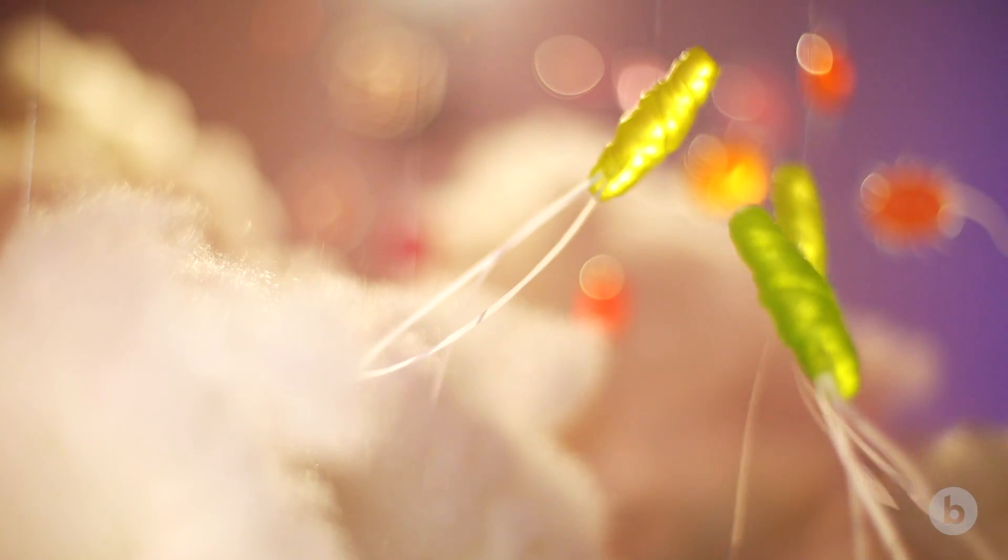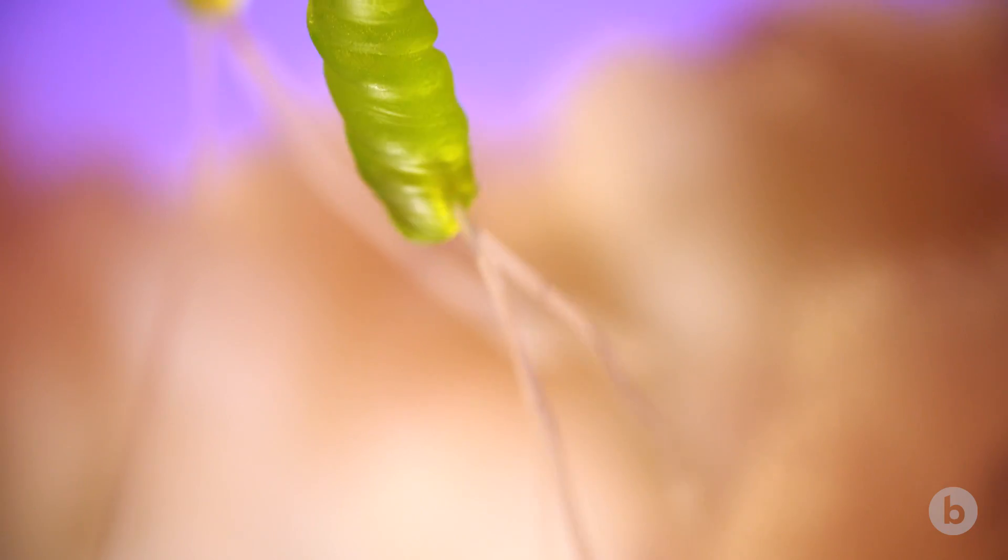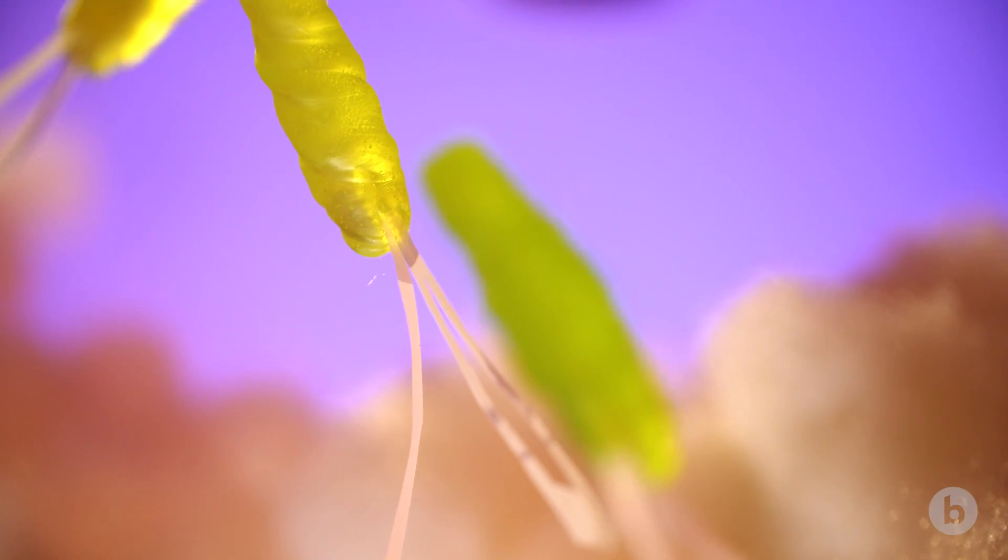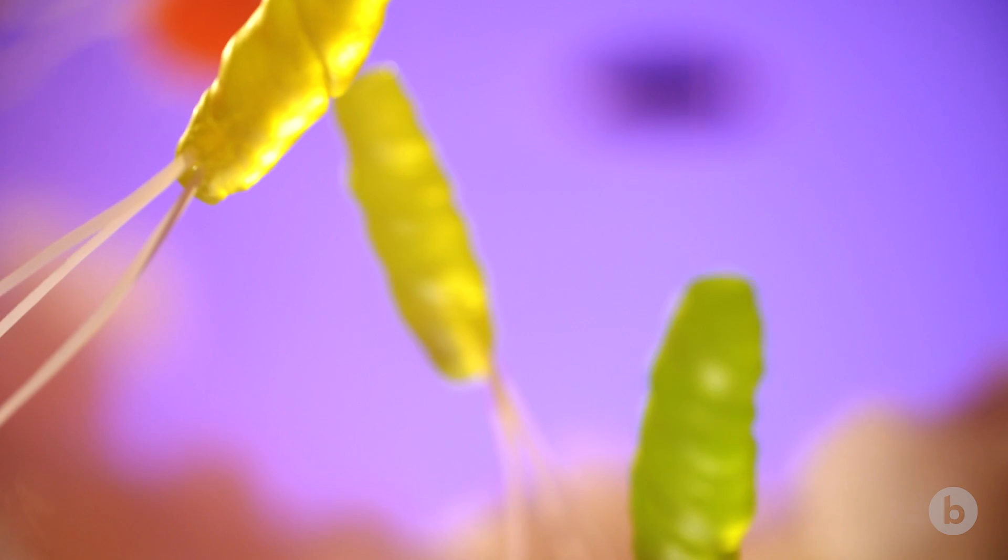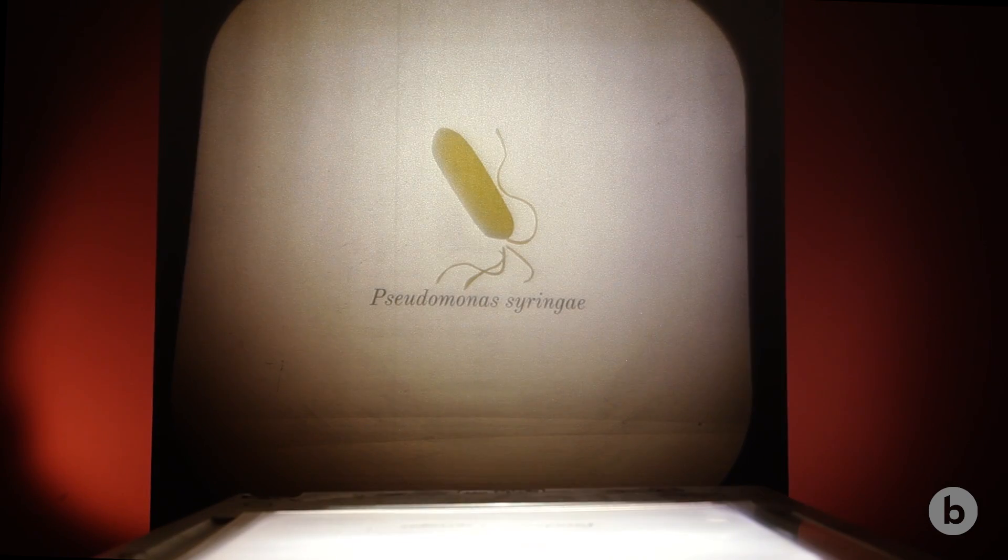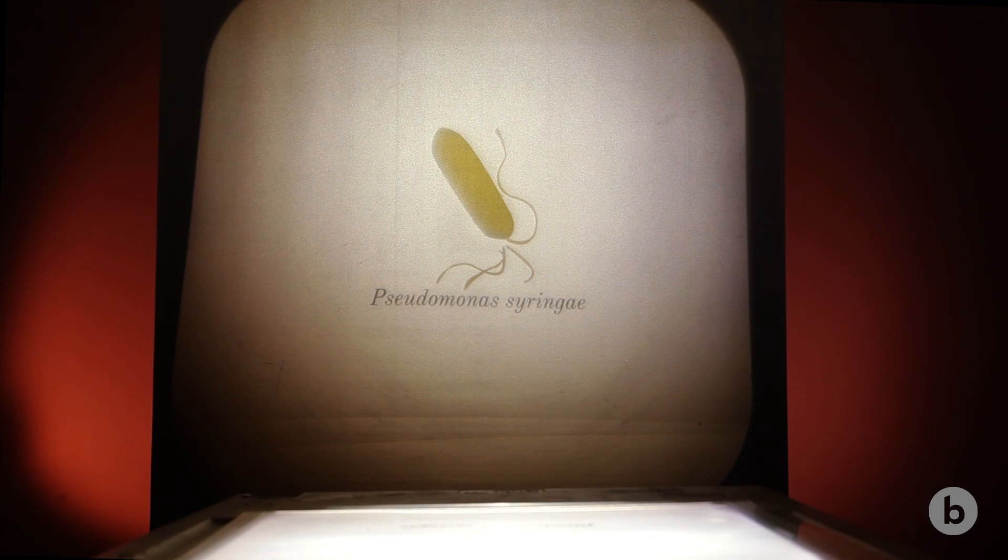This is a bacterium called Pseudomonas syringae. On the ground, it's an important plant pathogen. In the sky, it is the model organism in terms of ice nucleation. Ice nucleation, a first step in making rain or snow.